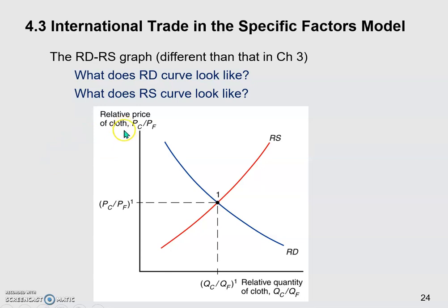I want to draw your attention to the axes. The vertical axis is the relative price of cloth, so it's PC over PF — the same as the one we used in the previous chapter. The difference comes from the horizontal axis: it's the relative quantity of cloth, QC divided by QF. In the previous chapter, we had two economies — home and foreign — so the horizontal axis showed QC plus QC-star divided by QF plus QF-star. But here we only have one domestic economy on this graph. Once we understand this, we're going to add international trade.